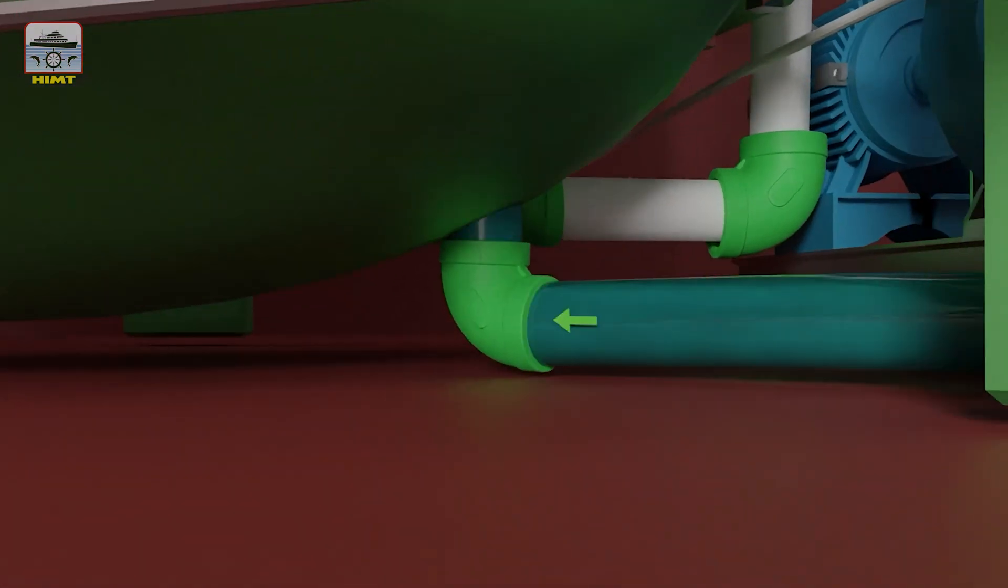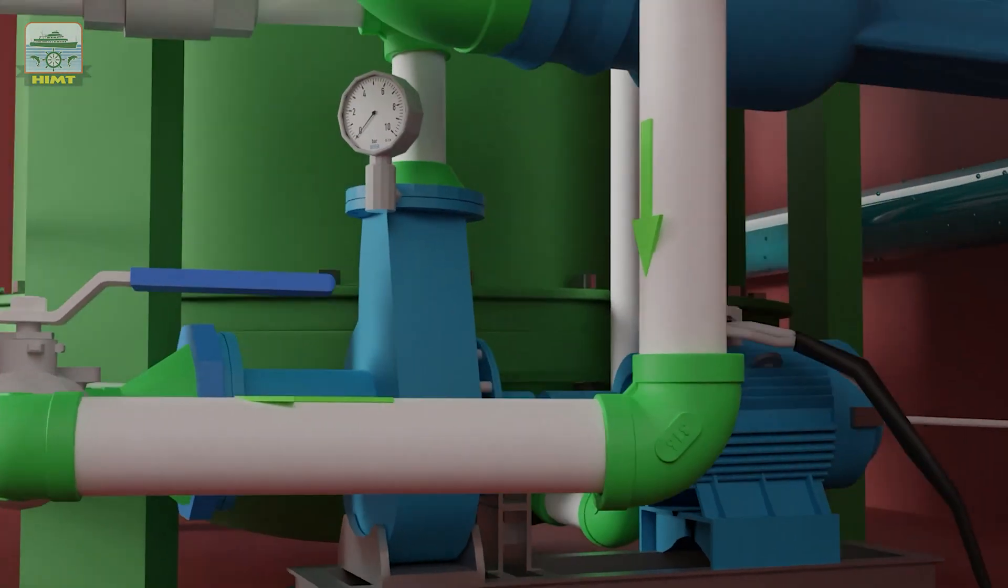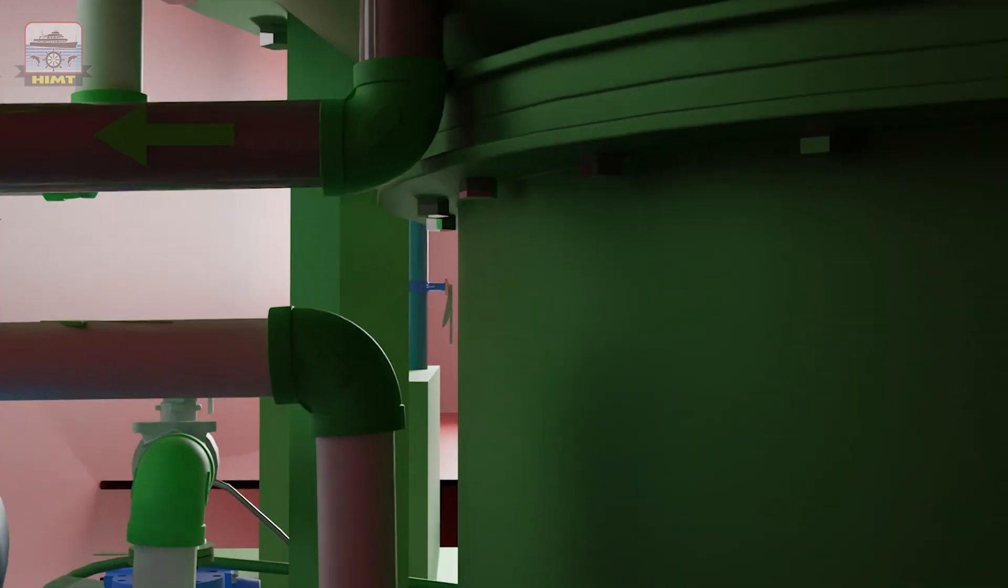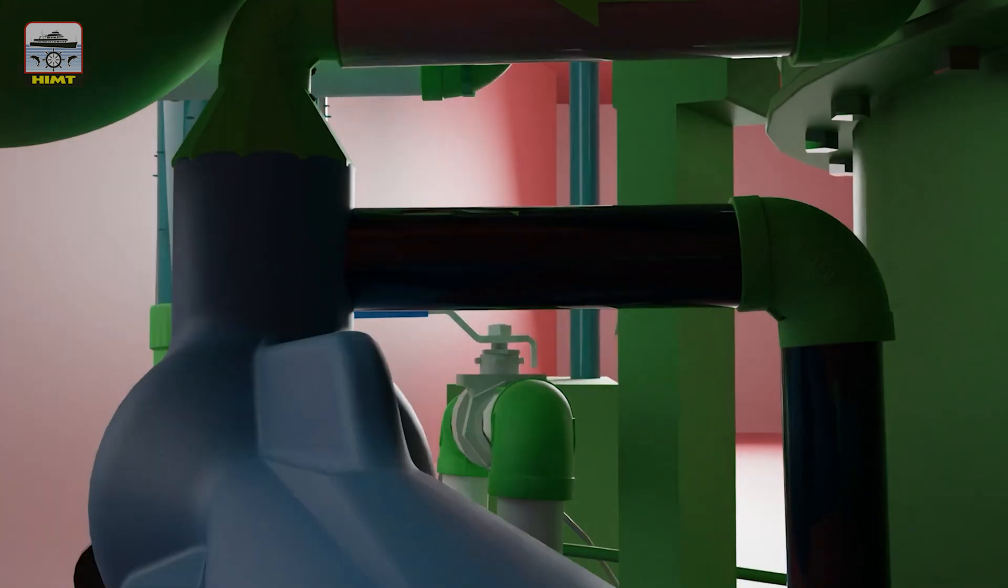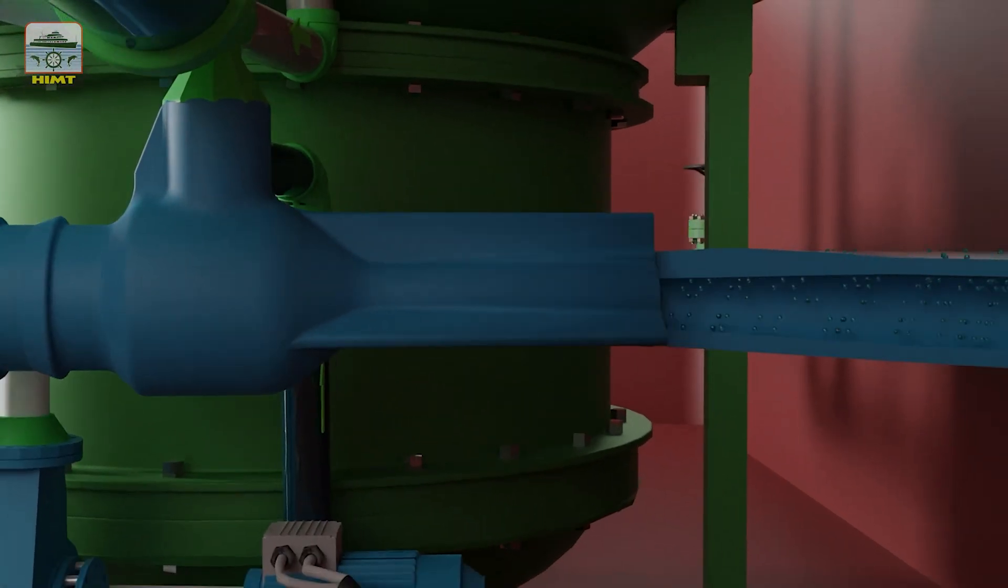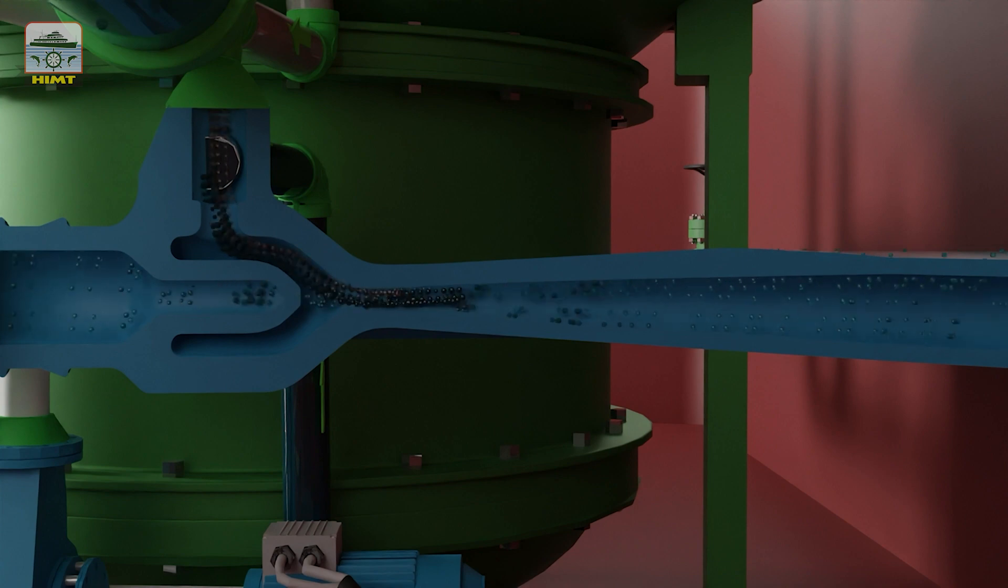The seawater as it flows through the ejector sucks the air and the brine from the shell due to Bernoulli's principle. This causes the vacuum to be created inside the shells so that the evaporation of the seawater can take place at a lower temperature with the available waste heat of jacket water.